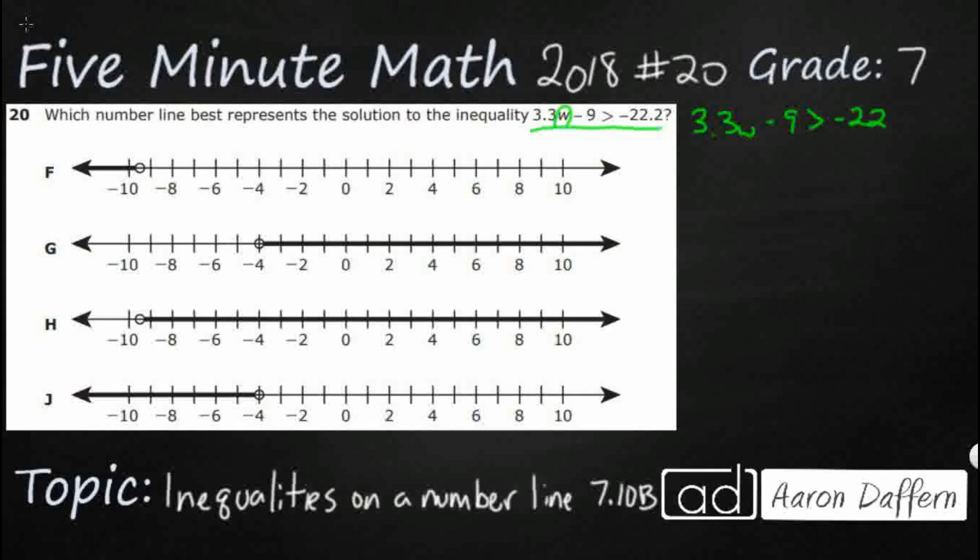The only thing we need to watch for is since it's an inequality, if we multiply or divide by a negative number, we're going to need to flip the inequality. But first let's just see this minus 9. I'm going to add 9 to both sides.